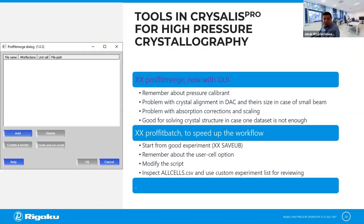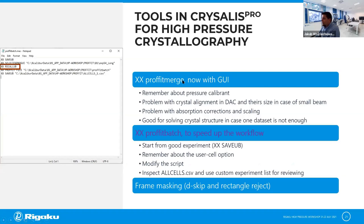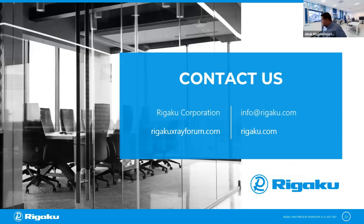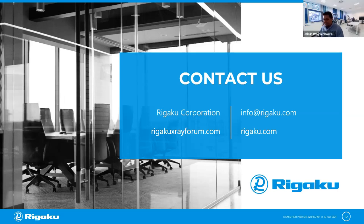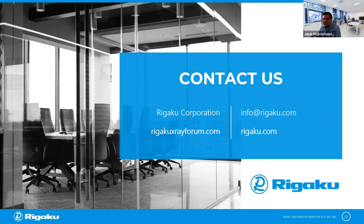Sorry for running over time — there's a lot of material to cover. Additional advanced tools include ProfitMerge with GUI, xprofbatch, and frame masking disk keeper, which we can leave for another time. To reinforce the key point: this is all about what to do when things go wrong. When things go well, even AutoChem can work with high-pressure data — it's not necessarily difficult every time. I did start by showing that auto-processing works automatically too. With that, let's take a break and meet again in eight minutes.